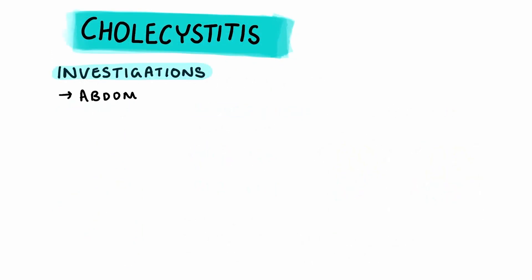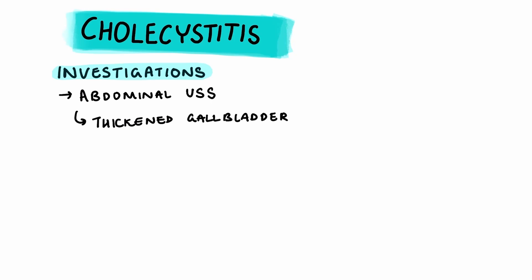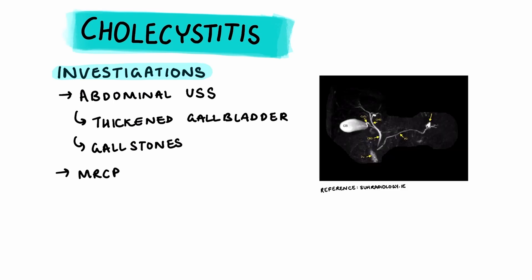Investigations for acute cholecystitis include an abdominal ultrasound, which will usually show a thickened gallbladder and sometimes gallstones. MRCP can also be used to see the biliary tree in more detail.